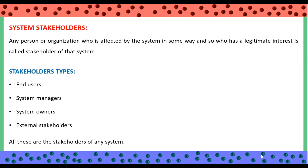What are system stakeholders? A system stakeholder is a person who is going to be affected by the system by any means. It can be a system user or any other person who can be affected by the system. The definition of system stakeholders: any person or organization who is affected by the system in some way and so who has a legitimate interest is called a stakeholder of that system. Examples of system stakeholders can be end users, system managers, system owners, and external stakeholders.